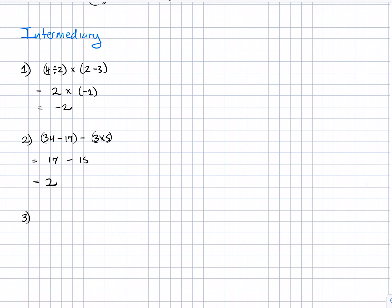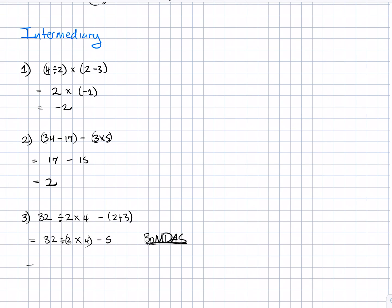Example 3: 32 ÷ 2 × 4 − (2 + 3). Evaluating the bracket first, 2 plus 3 is 5, giving us 32 ÷ 2 × 4 − 5. We evaluate 2 × 4 first because multiplication is evaluated before division in order of operations, giving 32 ÷ 8 − 5. Then 32 ÷ 8 is 4, so 4 minus 5 equals negative 1.